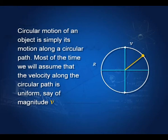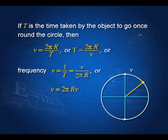An object is moving in a circle with constant velocity v. The time period is 2πr/v, where r is the radius, and the frequency ν is 1/T, which equals v/(2πr). We can also write v as 2πrν, where ν is the frequency.